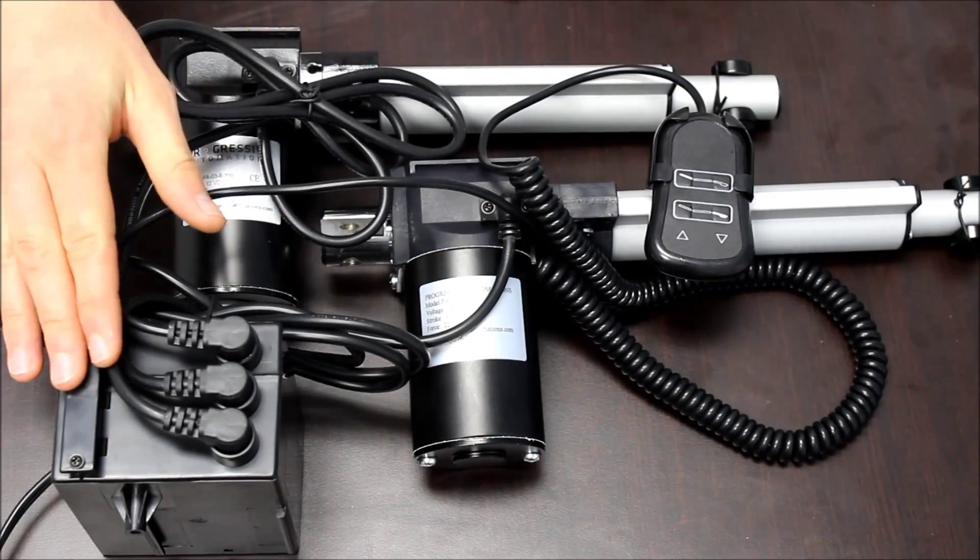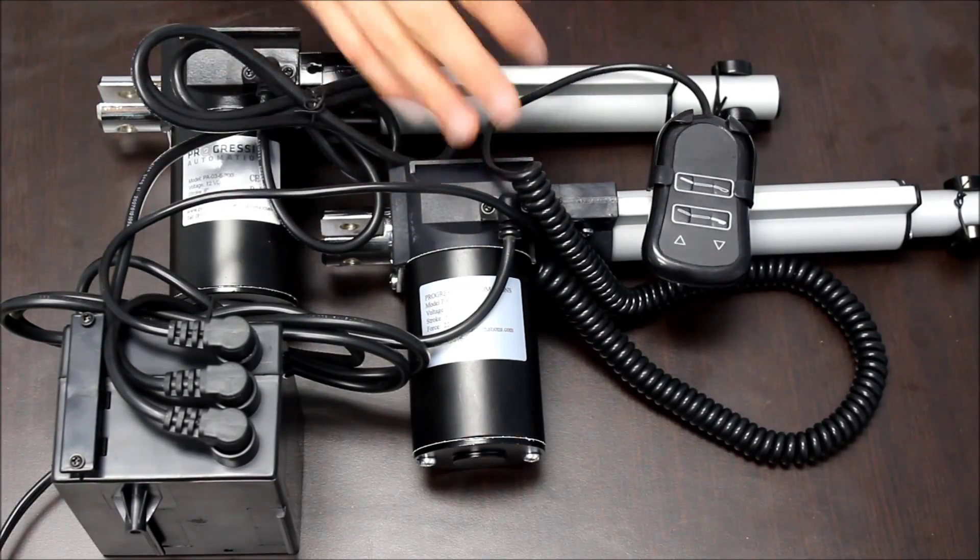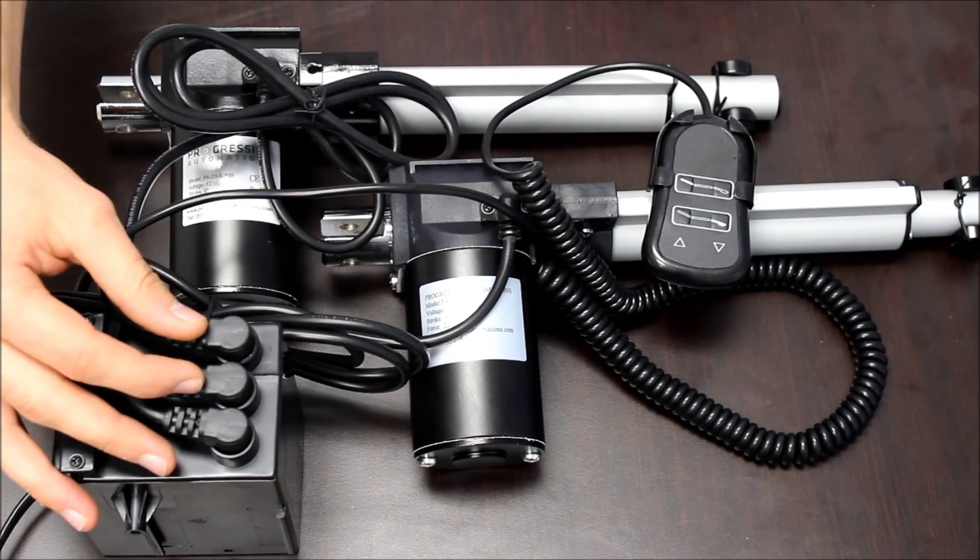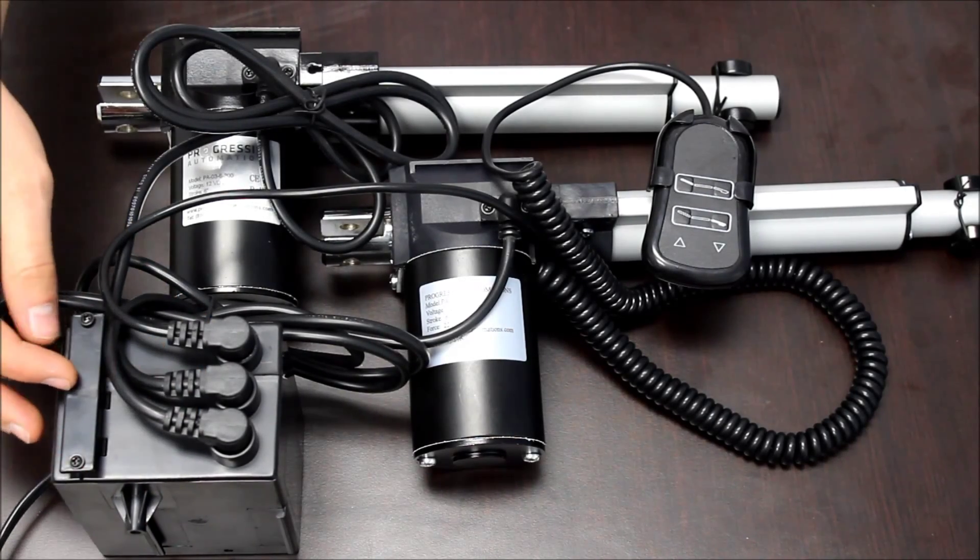Here is the PA22 controlling two actuators. Again, you have one plug for the hand remote and two plugs for the actuators, and you can use the bar to tidy up the wiring.